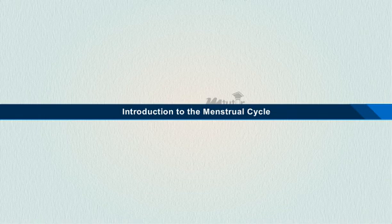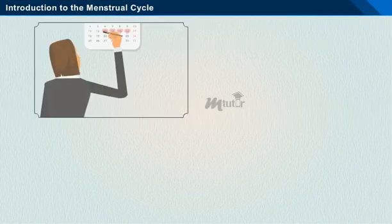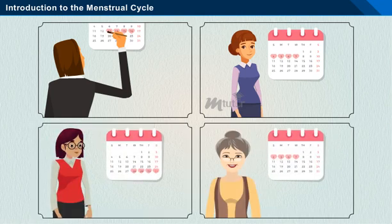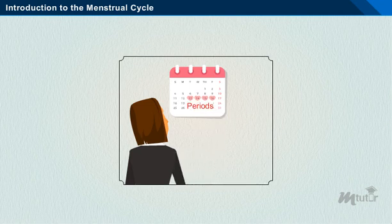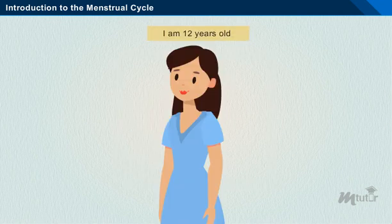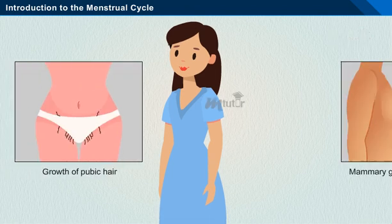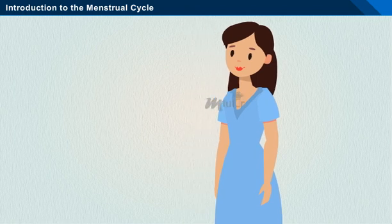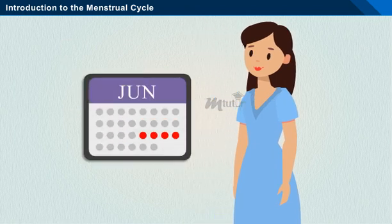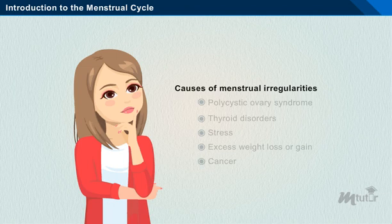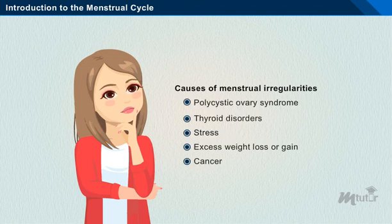Introduction to the Menstrual Cycle. A female has a lot of things to keep track of in her day-to-day life, irrespective of her age. One of them is the menstrual cycle calendar. Generally, a girl experiences her first menstruation between 10 and 15 years of age and attains puberty. During this stage, the girl's body is vulnerable to several changes, such as the growth of pubic hair and budding of the mammary glands. Since then, it is important to know whether she is ovulating every month, because irregular menstruation may sometimes indicate a serious health issue.